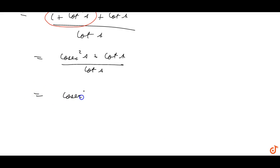This is cosec square A upon cot A plus 1. We can write this as cosec A into cosec A upon cot A plus 1.